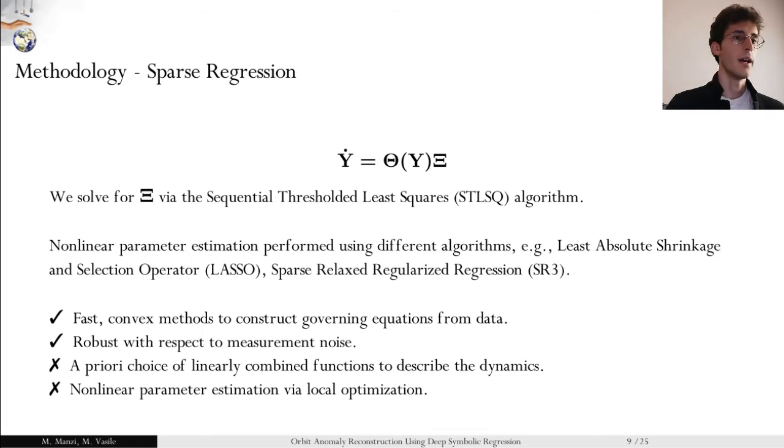Usually, and that's what's done in this work as well, we estimate the values of the coefficients using the sequential thresholded least squares algorithm. This is a fast convex method, and it's useful in leveraging the linear nature of the linear combination of the terms of the acceleration. Nevertheless, while it's robust to noise, this technique has some problems with the non-linear parameter estimation, making use of local optimizations sensitive to initial guesses. Also, it's not obvious that the choice of the functions library describes fully the dynamics of the system.